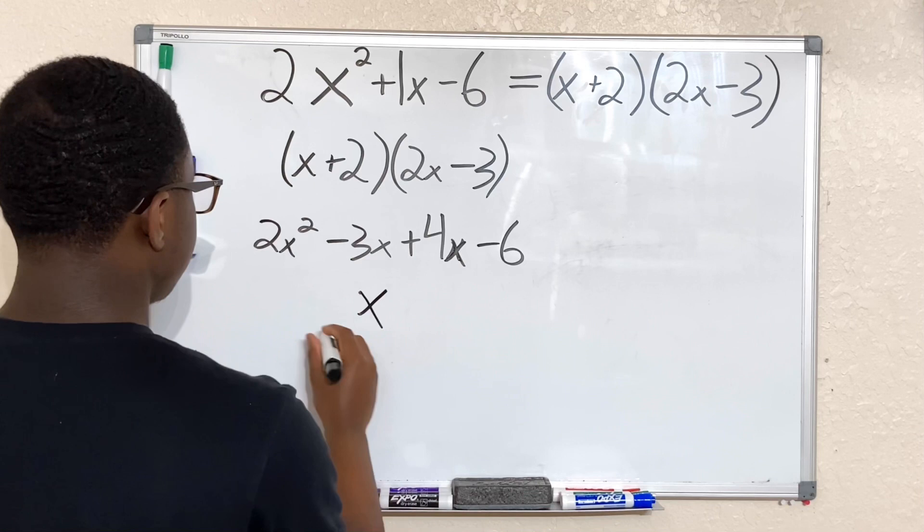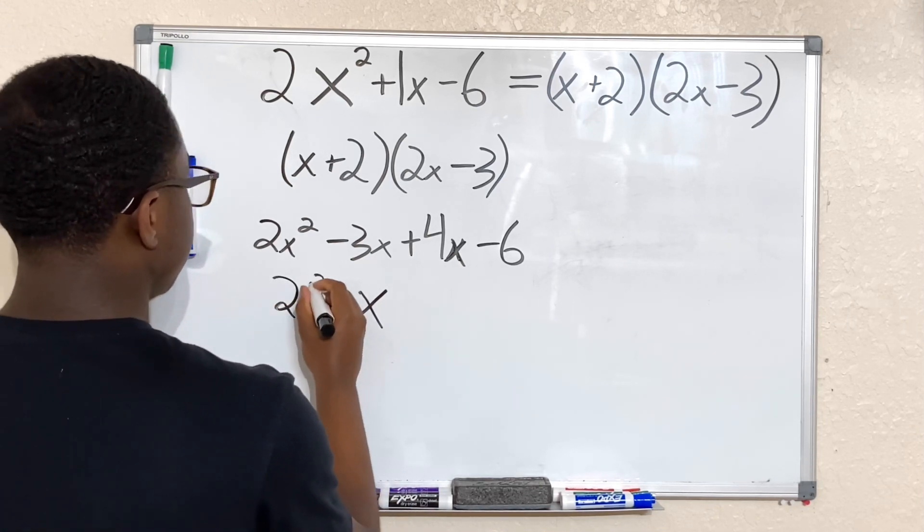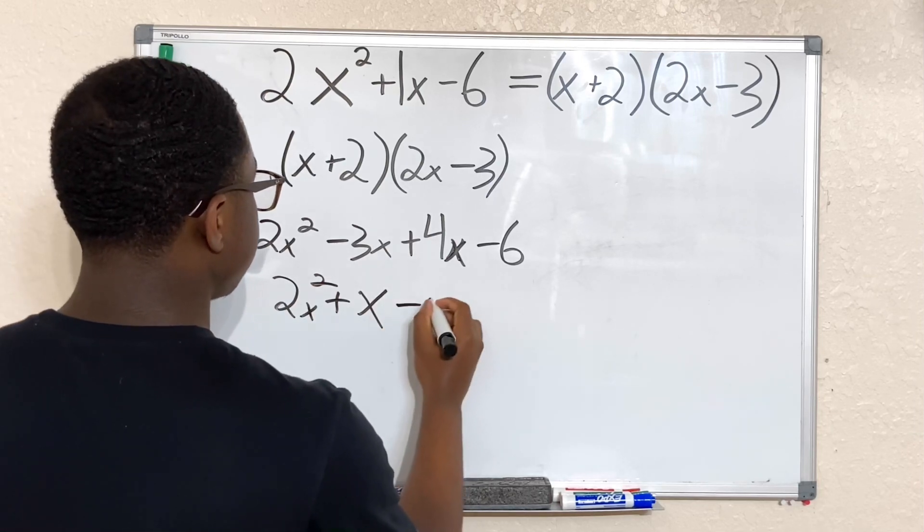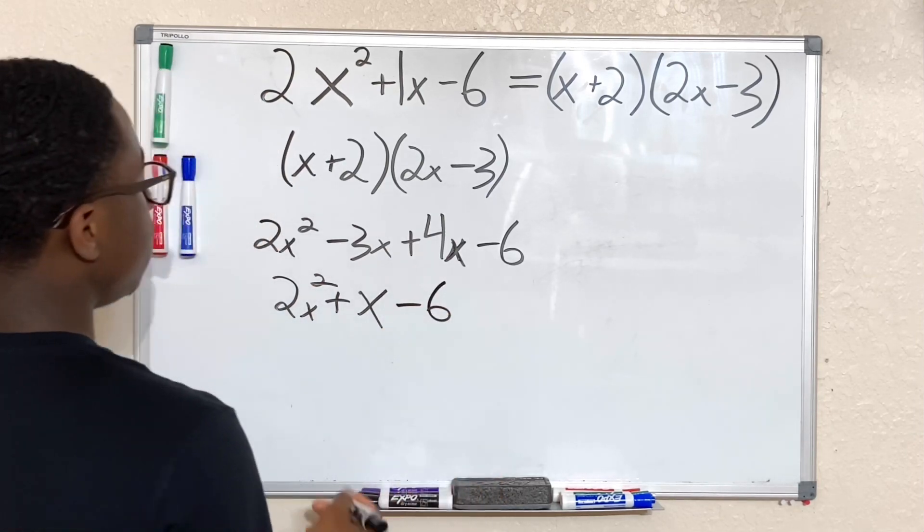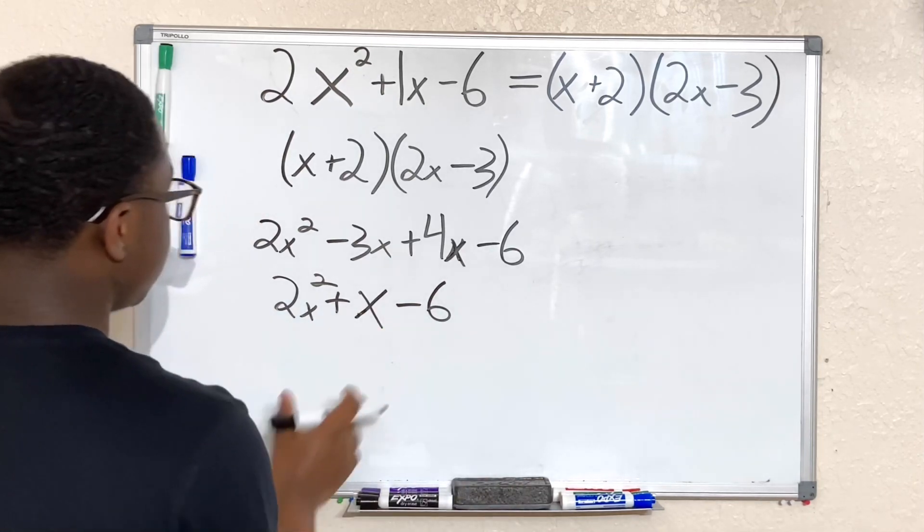And bring everything else down. So we have 2x squared on this side. On the other side, we have -6.